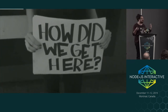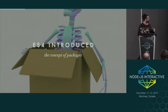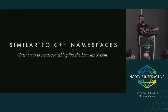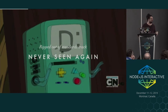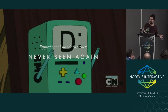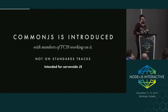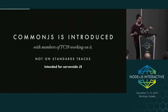A question you may have is how do we get here? Modules and packages originally started in the ES4 spec, which introduced the concept of packages - somewhat similar to C++ namespaces, with intent to create something similar to the Java JAR system. Unfortunately, it was ripped out of the standards track and never seen again. ES4 as a whole never really became a thing, other than ActionScript, which was an implementation of it. CommonJS was then introduced, with some TC39 members working on it, but importantly CommonJS was not done in a standards track. It was primarily created specifically for server-side JavaScript.